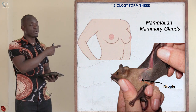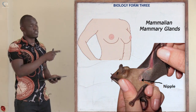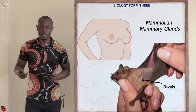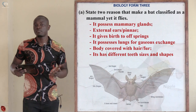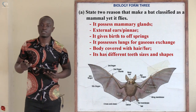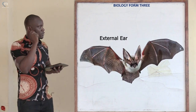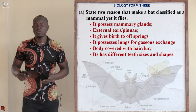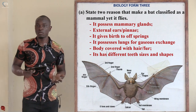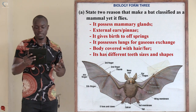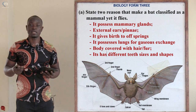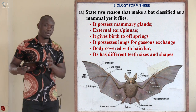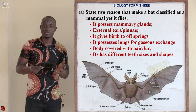The bat also possesses the external part of the ear called the pinna, which supports its classification as a mammal. Additionally, the body of the bat is covered with hair or fur — it is only mammals whose bodies are covered with hair or fur. Birds possess feathers, but the bat possesses hair, so it is classified as a mammal and not a bird.